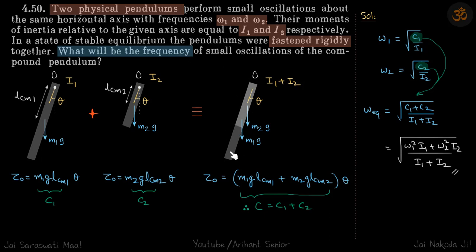Omega-1 and i1 is given for this pendulum, omega-2 and i2 is given for this one. If you combine them, I will become i1 plus i2, and the new omega is what we need to find.